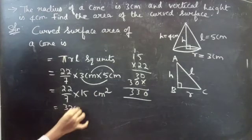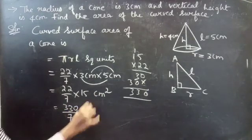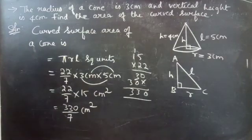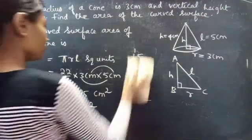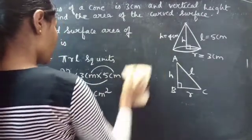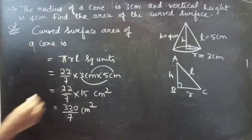We got 330 by 7 centimeters square. Now we are going to divide 330 by 7.